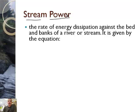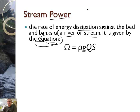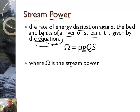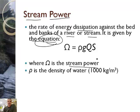A stream of power is the rate of energy dissipation against the bed and banks of a river or stream. It is given by the equation. You mean there's math with rivers? Oh, you bet. And now we've got a funny looking equation with funny looking symbols. You know, scientists, they run out of letters. When they ran out of letters like A, B, C, D, they started using like Greek symbols. And so that's what they did. So, all right, where Ω is the stream power.